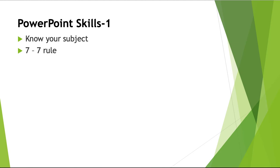The 7x7 rule: you should have seven lines and seven words on one slide. This is to avoid losing the attention of your listeners. The rule of thumb is two slides per minute. So if you have a 30-minute time limit, you should have at most 60 slides. Or if you have 10 slides, five minutes will be fine.